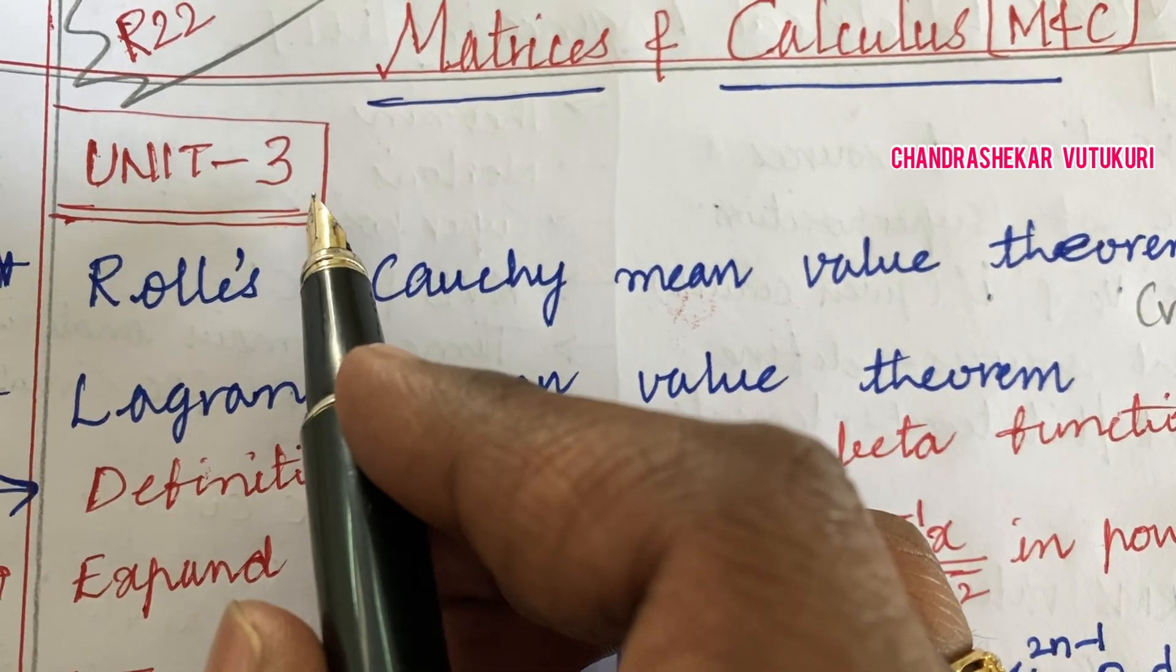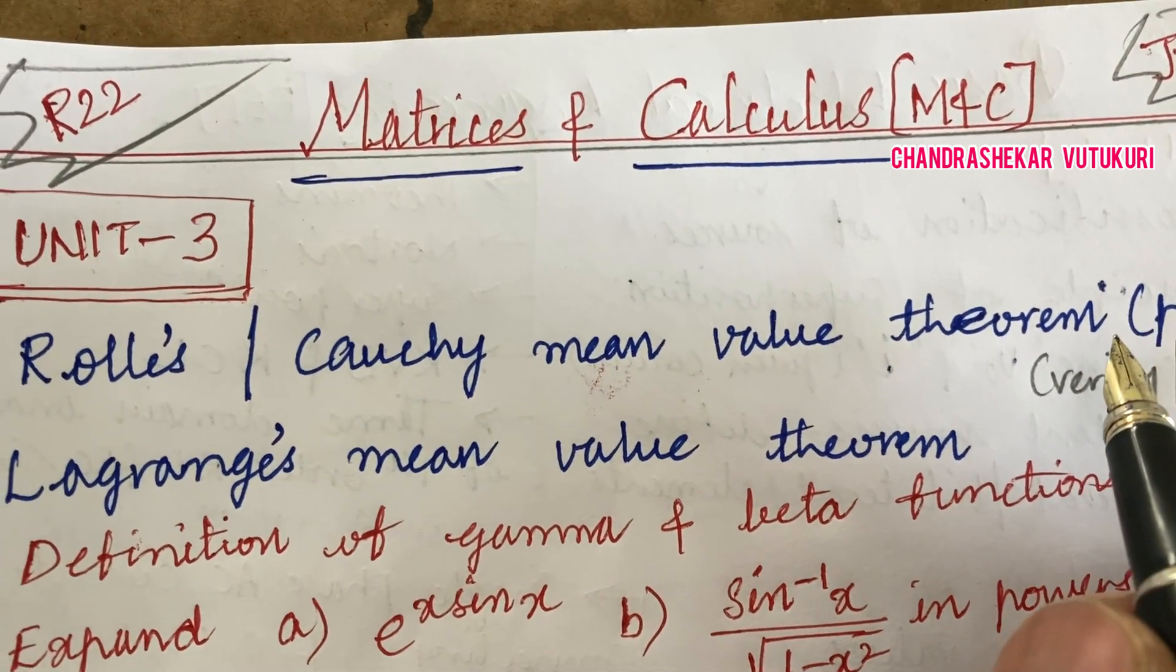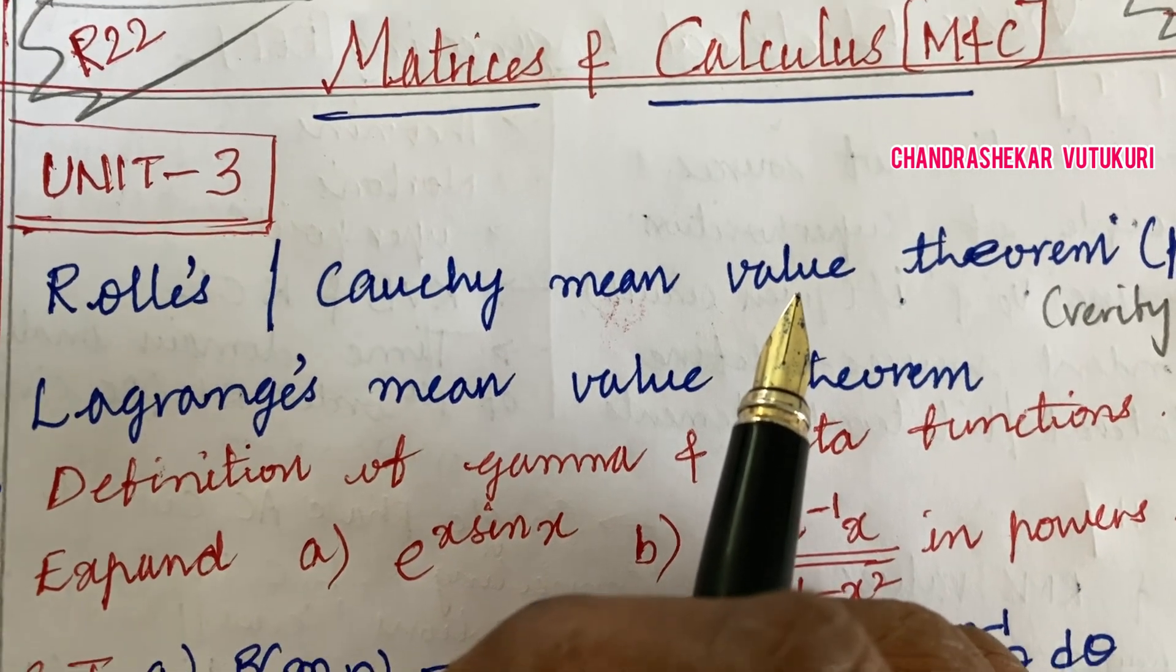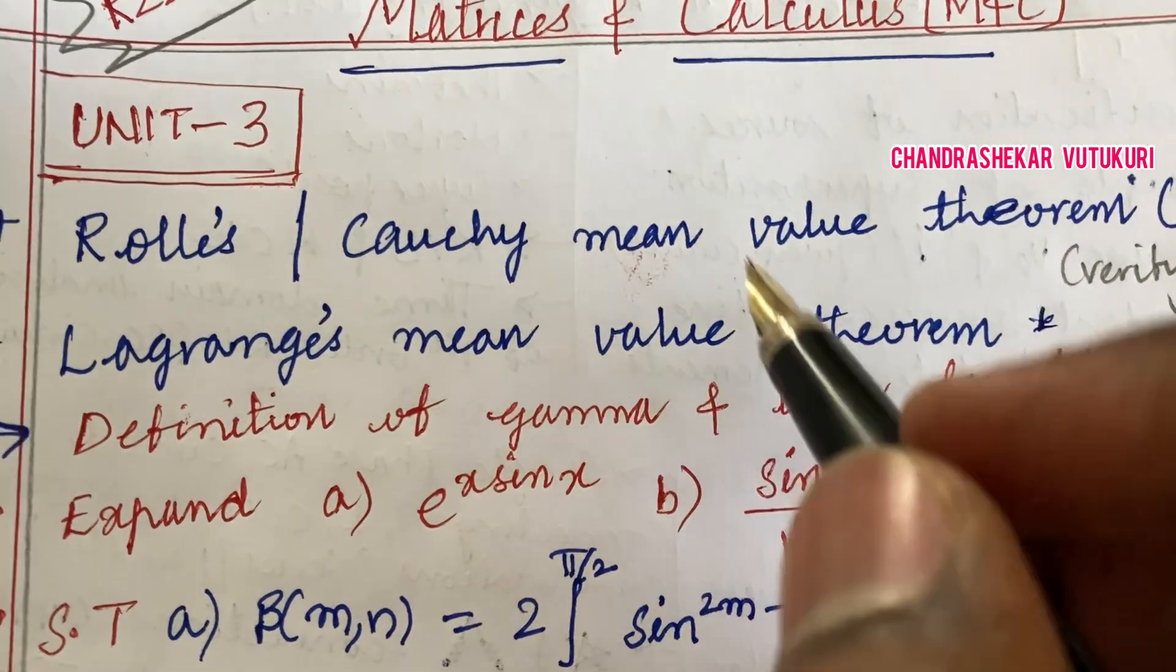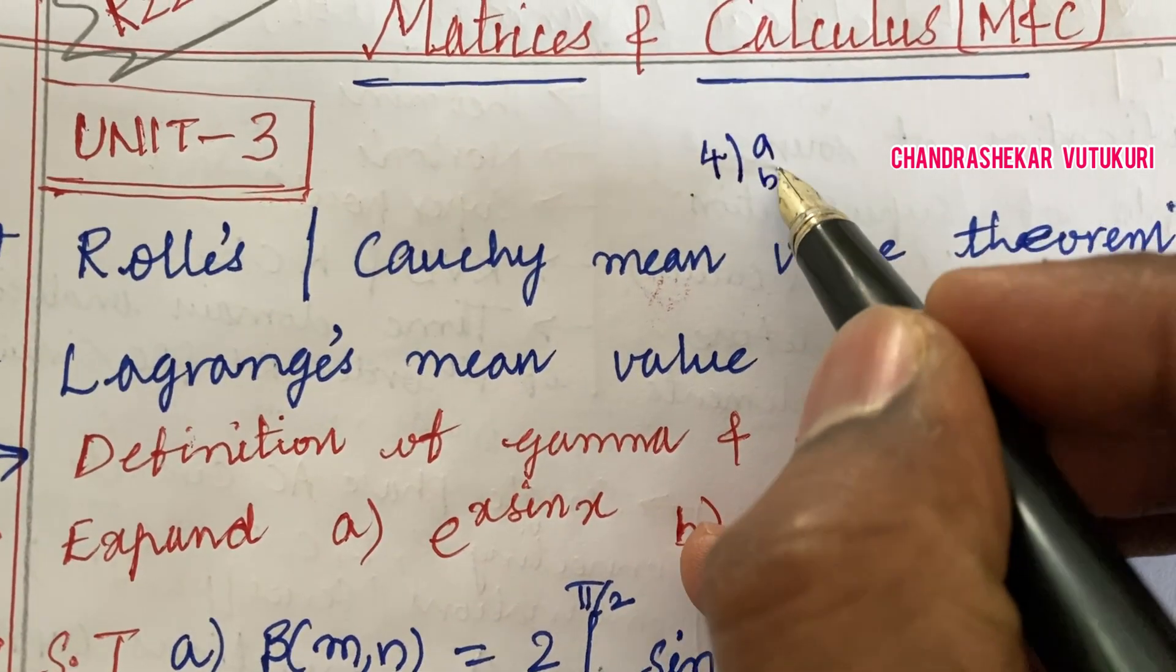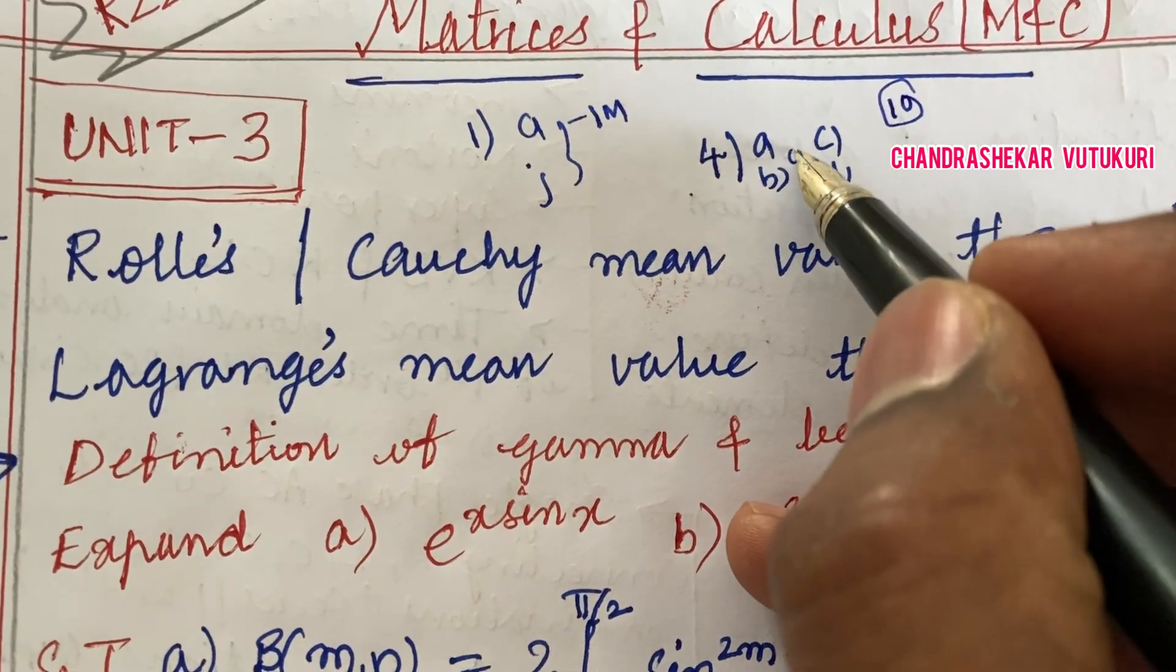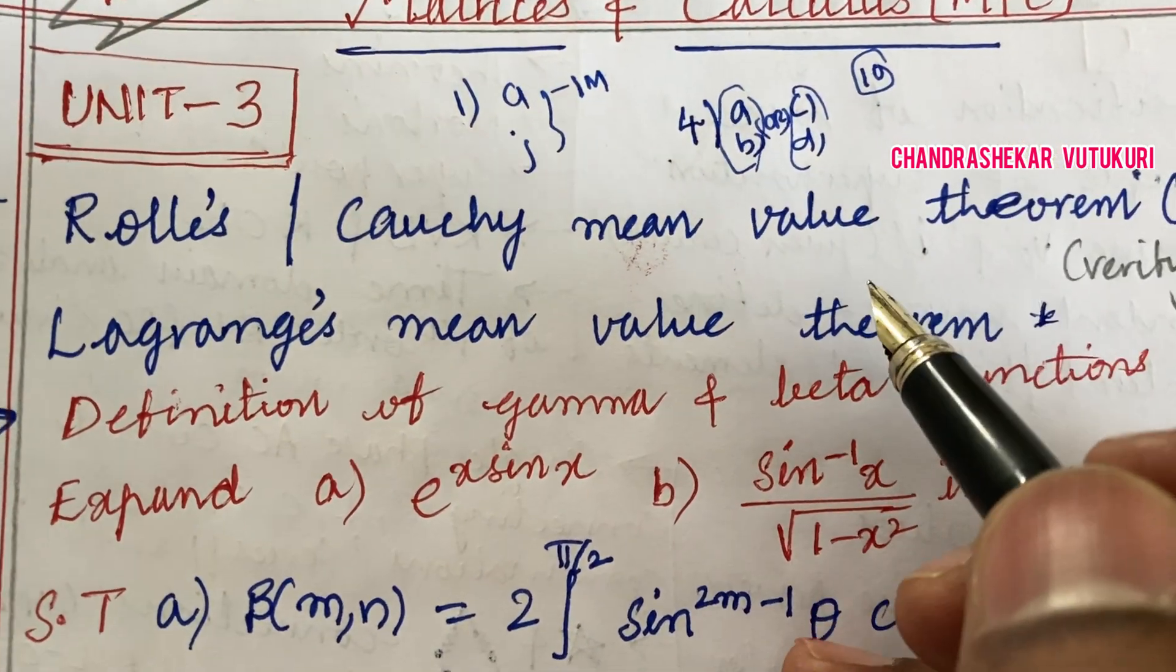The first and foremost question for the third unit is Rolle's theorem or Cauchy's mean value theorem and problems related to it, or a statement will be given and you need to verify it. Lagrange's mean value theorem is also one of the topmost important questions. This is the fourth question in your question paper—AB as well as CD, and short questions from 1A to J. Each short question carries 1 mark and the long question carries 10 marks.